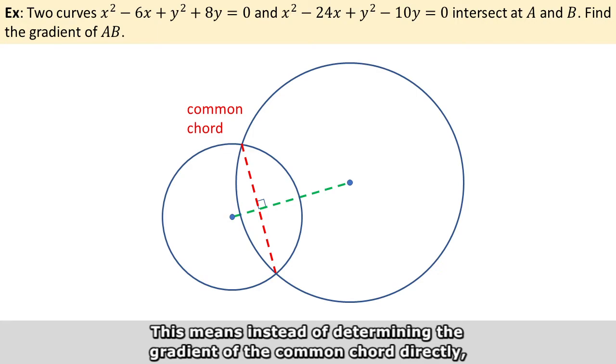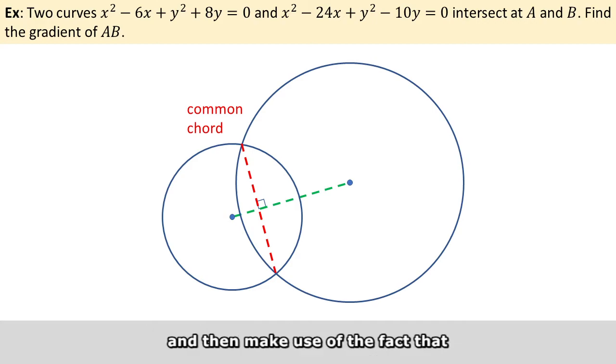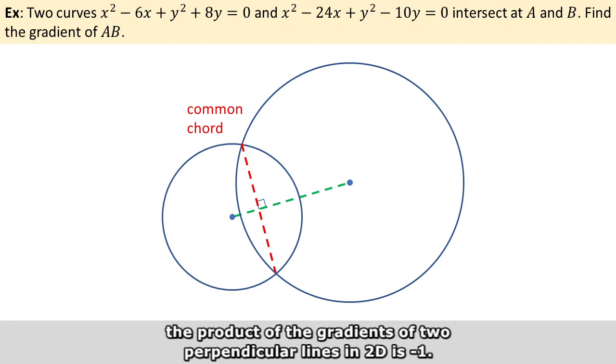This means instead of determining the gradient of the common chord directly, we can determine the gradient of the line joining the two centers, and then make use of the fact that the product of the gradients of two perpendicular lines in 2D is -1.